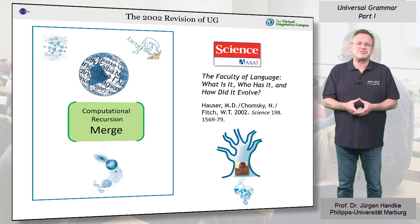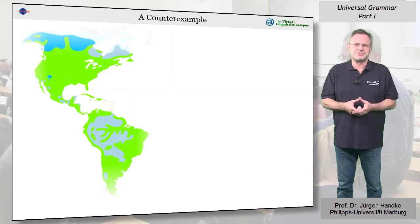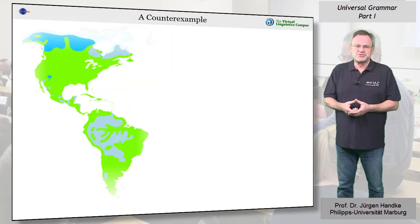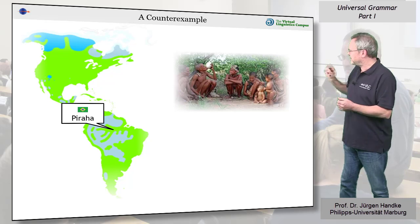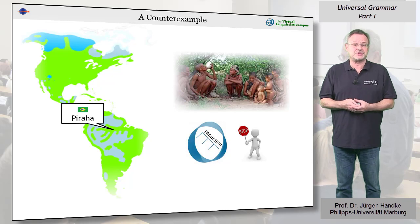is what sets language apart from other types of cognitive processes such as categorization and relational perception. However, as with the 1960 version of this theory, there is a counterexample, the Amazonian language Pidaha. This language does not exhibit recursive structures.